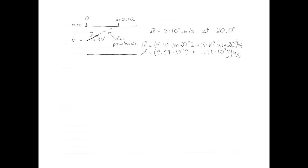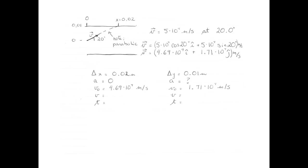We have velocities and displacements, which means this is a kinematics problem. The plan is to find the acceleration of the electron in this electric field, and from the acceleration to get the magnitude of the electric field. Let's put this plan to execution.